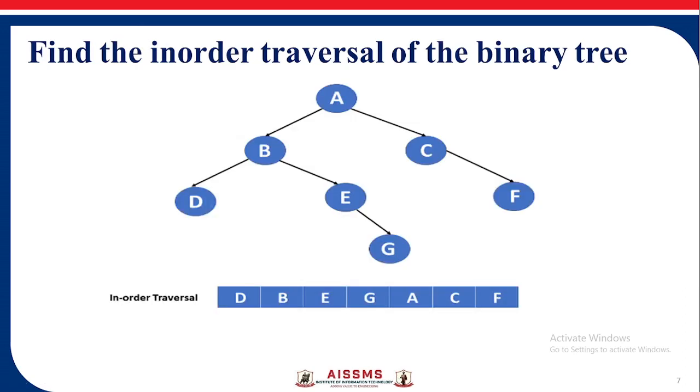Find the in-order traversal of the binary tree. Here, left, that is D, then root B, right E. It is not having any left, then E, then right G, then A. Then again to the right side, left-root-right, so C and F. So the in-order traversal is D, B, E, G, A, C, F.